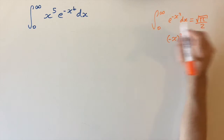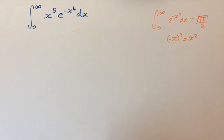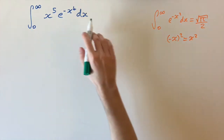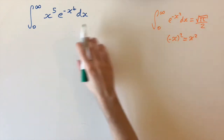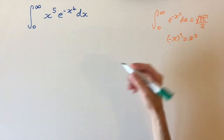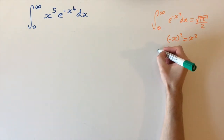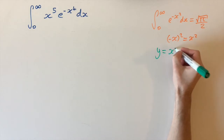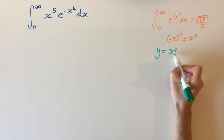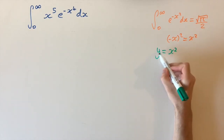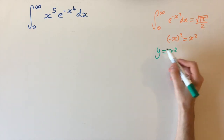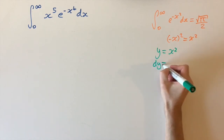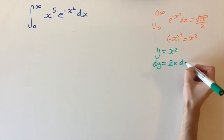This is what we're going to use to get the solution to our integral. We have x to the power of 4 in the exponent and we want to convert it into x squared, so we can use a substitution method. We let y equal x squared, because then x to the power of 4 corresponds to y squared. Differentiating, we have dy equals 2x dx.